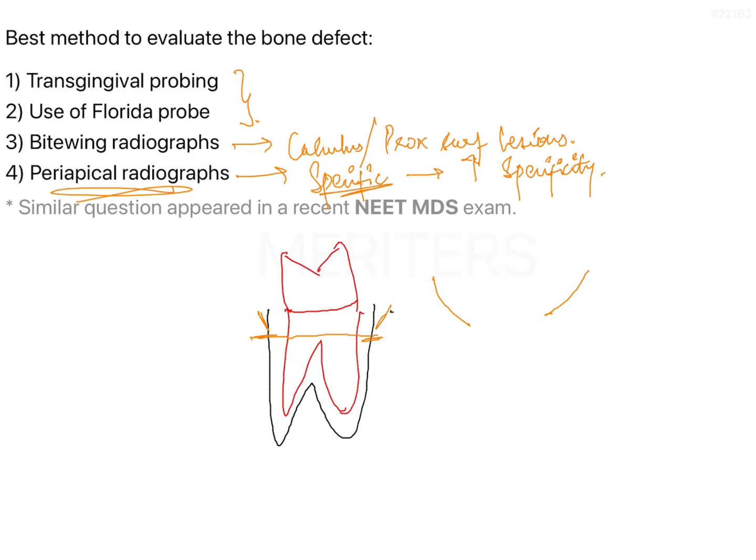Coming to transgingival probing and the Florida probe — the Florida probe is a calibrated probe with two main functions: it helps to identify the depth of the pocket, and it also helps to identify the CEJ. It is an automated probe. However, it does not help you identify the morphology of the bone pattern.